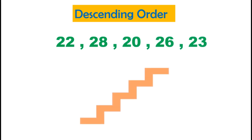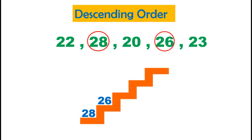Arrange 22, 28, 20, 26, and 23 in descending order. The biggest number is 28 — let's circle it. Now amongst the remaining numbers, the biggest is 26. Amongst the remaining three numbers, the biggest is 23. Now between 22 and 20, the bigger number is 22. We are only left with number 20.